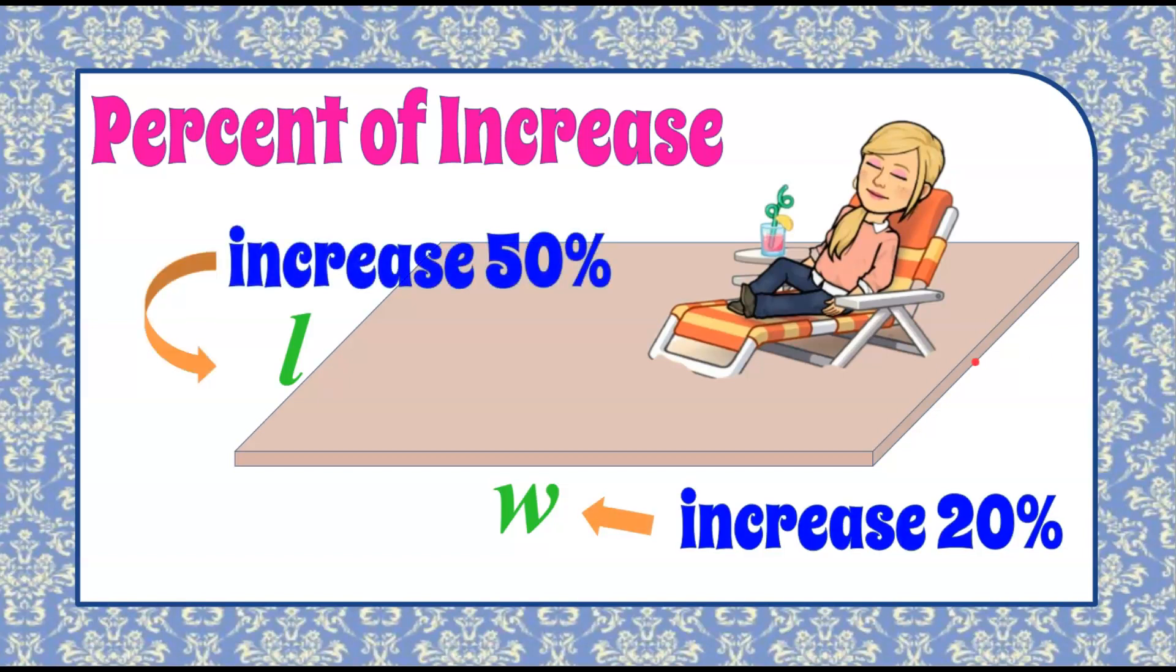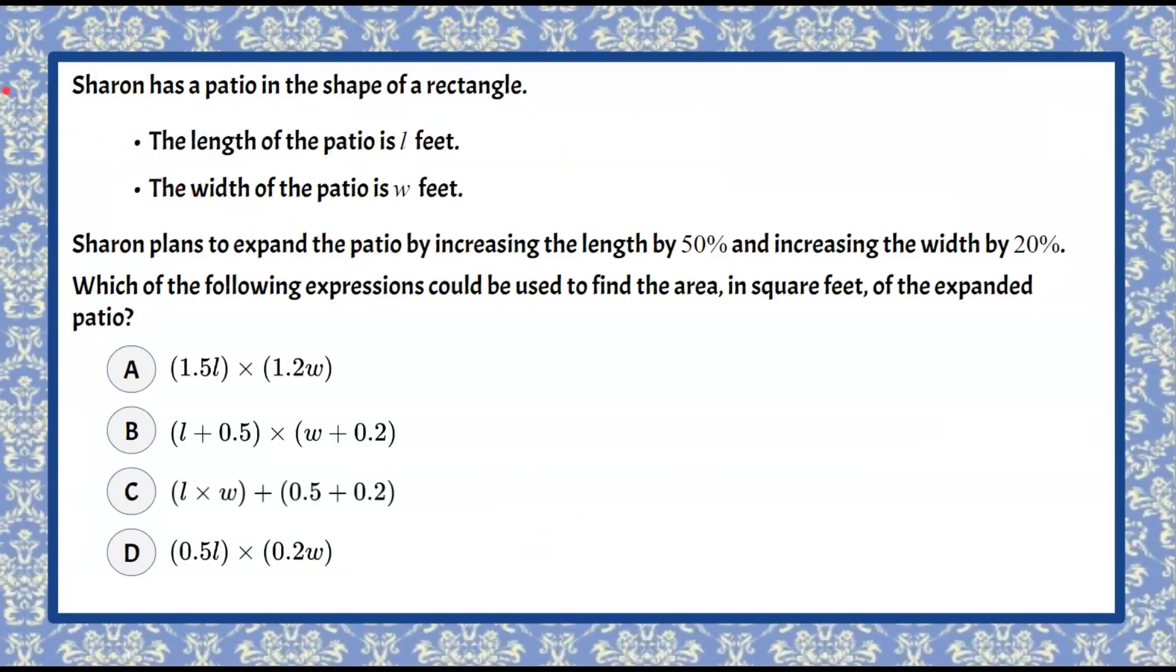Here's our math question today. We have Sharon who has a patio in the shape of a rectangle. The length of the patio is L feet and the width of the patio is W feet.